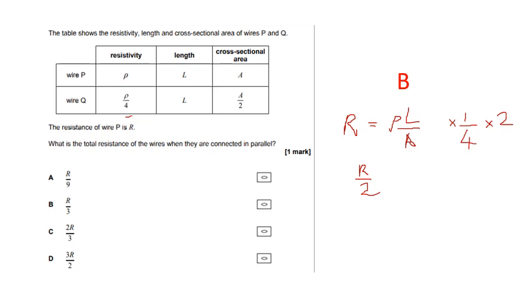So if I have R and R over two in parallel, what's the resistance going to be? Now, you can do it algebraically. To be honest, the way I did it, because it's quickest for me, I said, well, if R is 100 and then R over two is 50, and then I worked it out quickly on my calculator, and I got it to be 33. So in other words, it's R over three. And the answer is B.